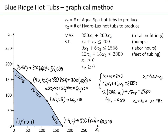Now if you look at these values — 54,000, 64,000, 66,100, 60,900, and 0 — the highest is 66,100. That is the maximum, and therefore this is the optimal solution. This method, of course, gives us the same solution as the level curves method. By enumerating corner points, we've determined that the optimal solution is to produce 122 Aqua Spas and 78 Hydro Luxes to obtain a maximum profit of $66,100.